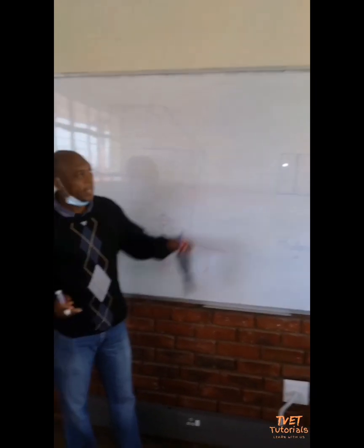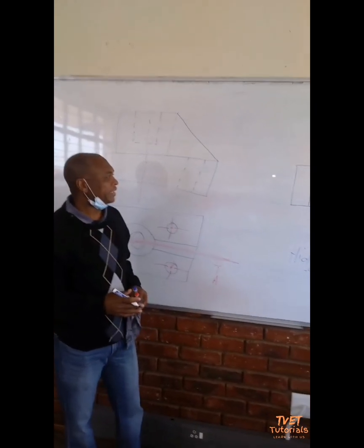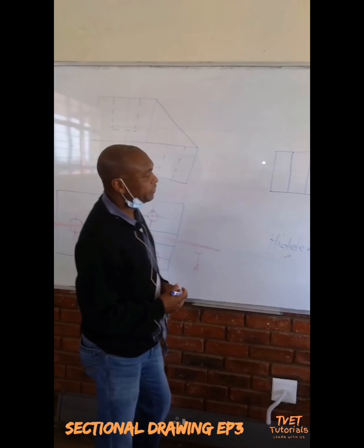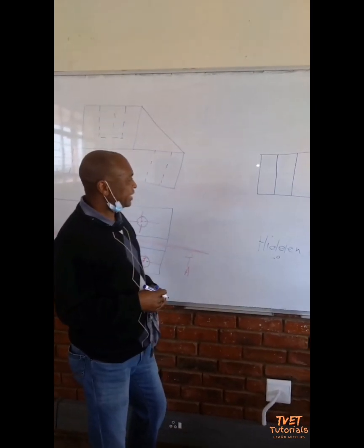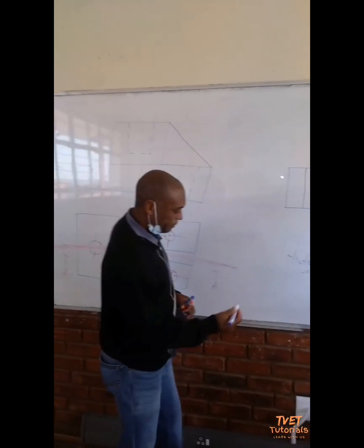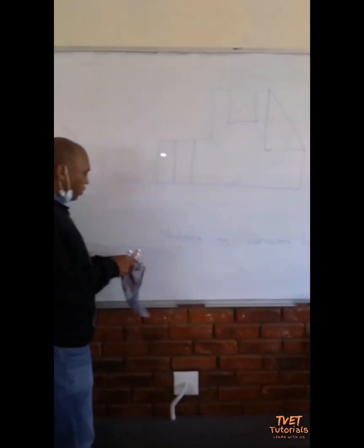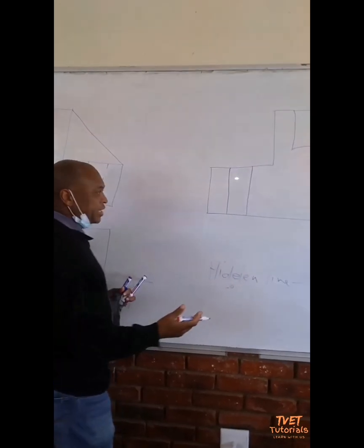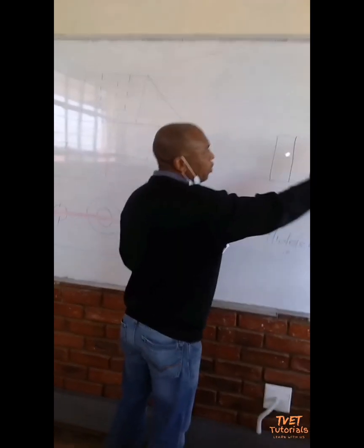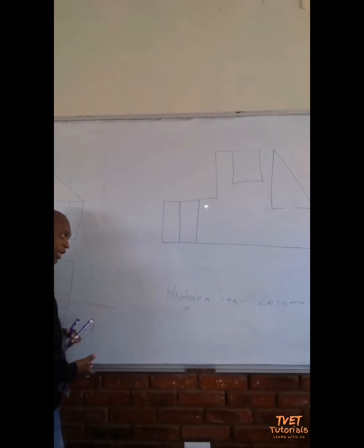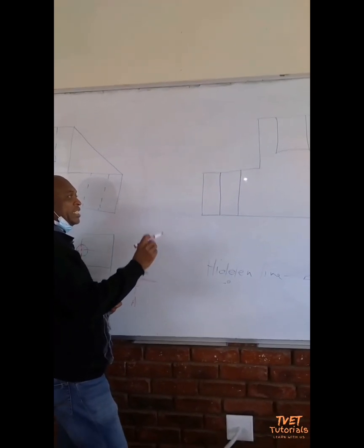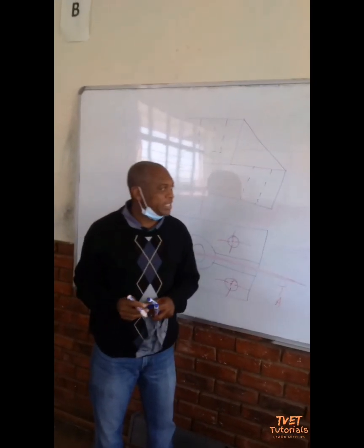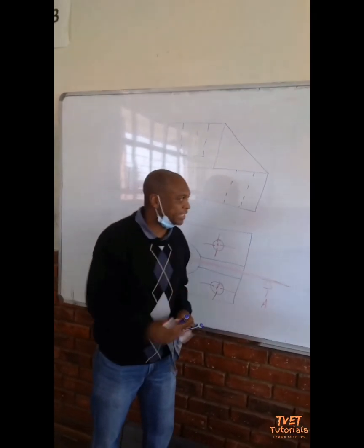Unfortunately, right now I don't have the 45-degree instrument, but I will just show you. Since we are doing it freehand, for you to understand it when you are going to use the real instrument. The sectioning lines can slide to the left or to the right; what is important is that each line must be equally spaced.